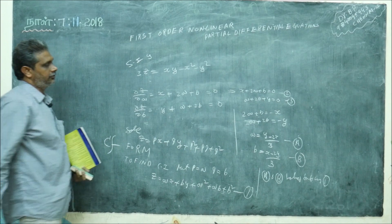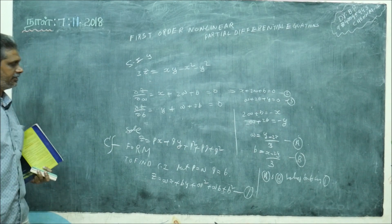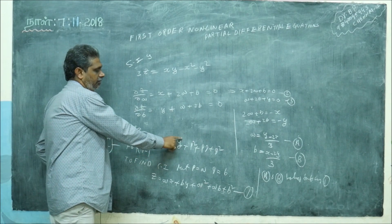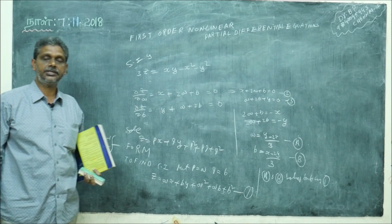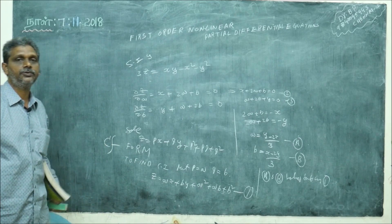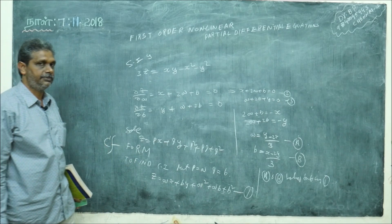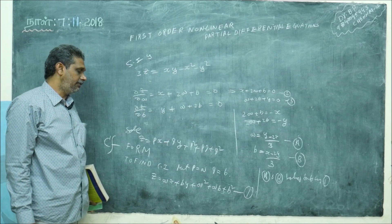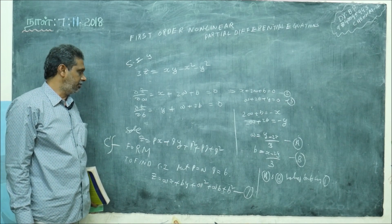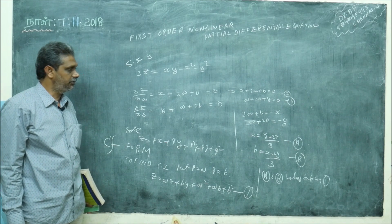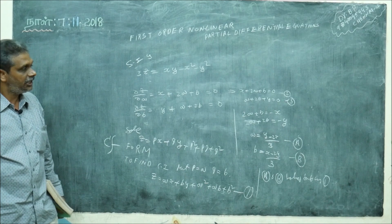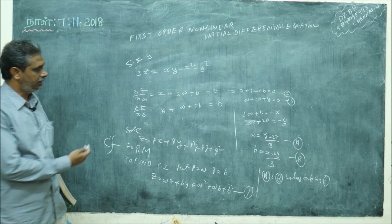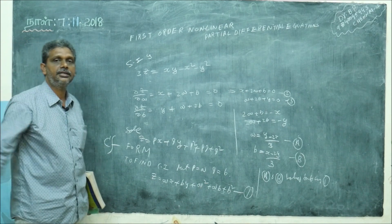This is the way. Clairaut's form has: only p to the power 1, x to the power 1, q to the power 1, y to the power 1, and f of p, q. Put p equal to a, q equal to b to get the complete integral. Then differentiate: ∂z/∂a and ∂z/∂b equal to 0, eliminate a and b, go back and substitute — you will get the singular integral.